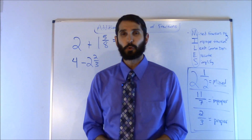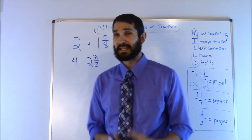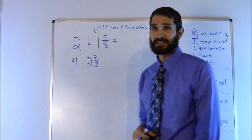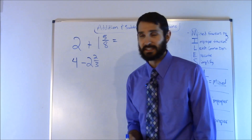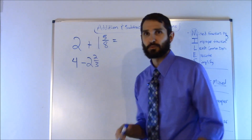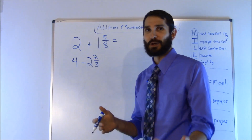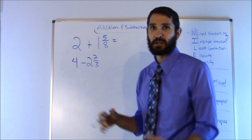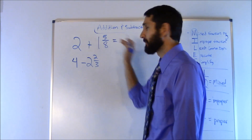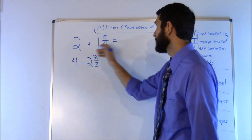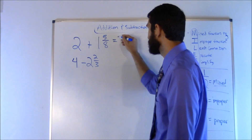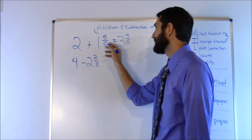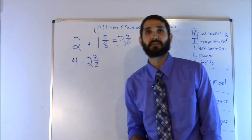Now a couple more problems. First: a whole number plus a mixed fraction. For addition, this is really simple — you don't need to go through the full mnemonic. Just add the whole numbers and carry the fraction part over. So 2 plus 1 and 5 eighths: 2 plus 1 is 3, and the fraction 5 eighths carries over. The answer is 3 and 5 eighths.